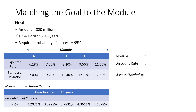Among these five modules, the advisor will choose the module with the highest minimum expectations, which is module D, with a minimum expectation of 4.3611%. So the advisor will choose module D as the most appropriate module, and the discount rate here will be 4.3611%. Sometimes the advisor will call the discount rate the funding cost, because that is the amount of assets needed to fund the investment in this module.